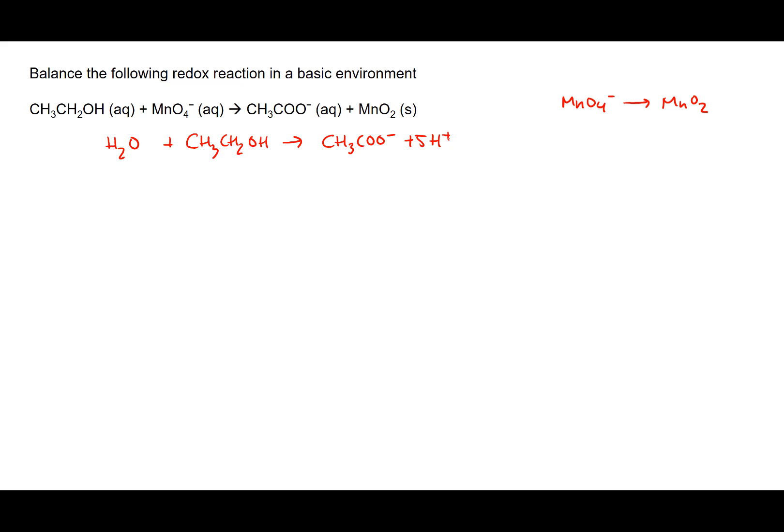That's essentially the same steps we would do in an acidic environment. The next step is where we switch it to a basic environment. To do that, we do a neutralization reaction where we add just as many equivalents of OH- to both sides as we need to neutralize the H+ — in this case, five OH- to both sides.